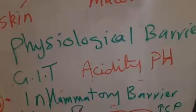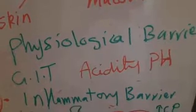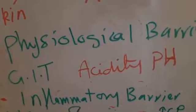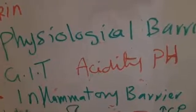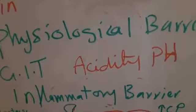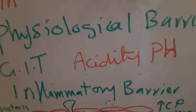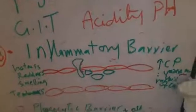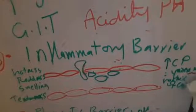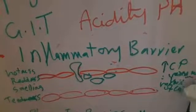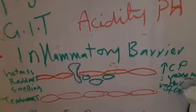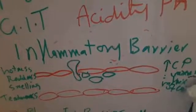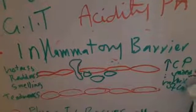The pH of the stomach is low, and this acidity interferes with infection if someone has ingested infected or contaminated food. The third barrier is the inflammatory barrier.